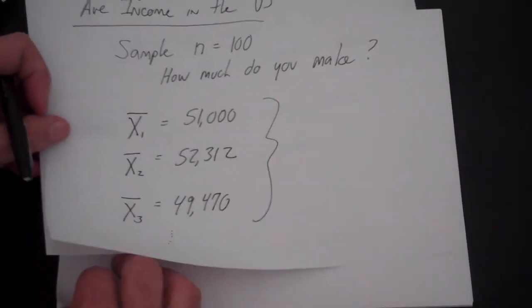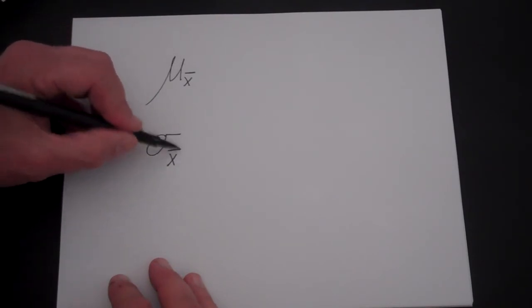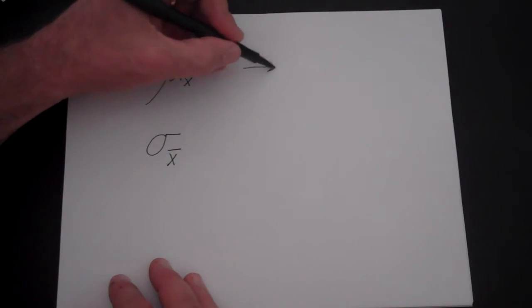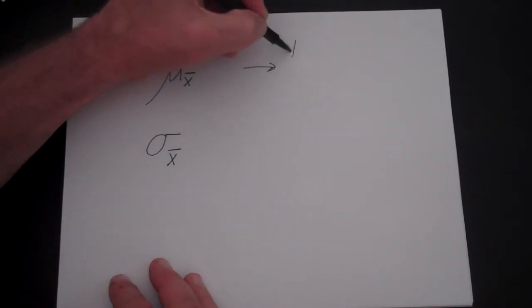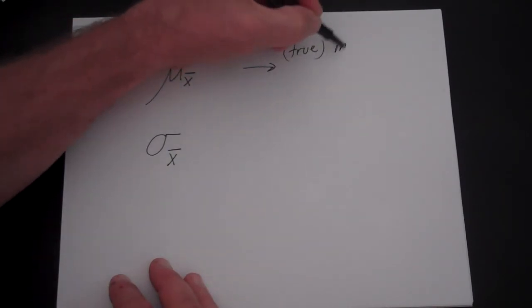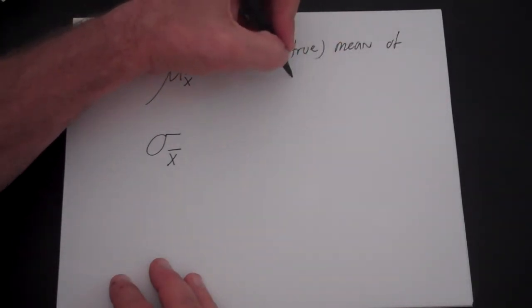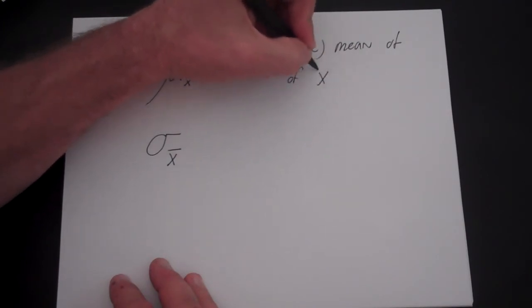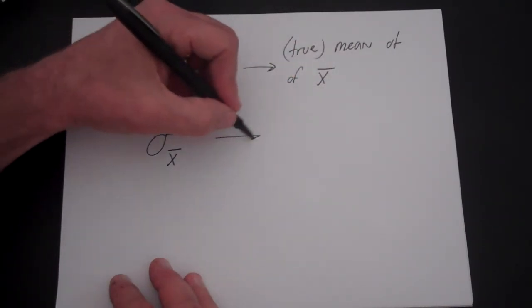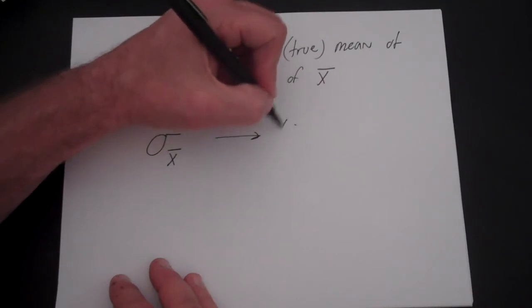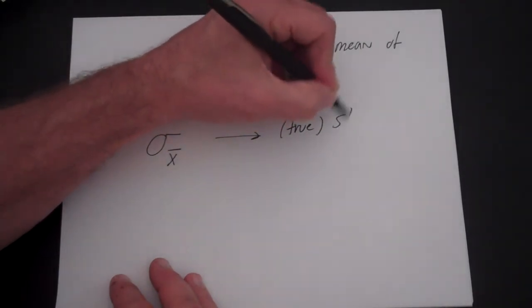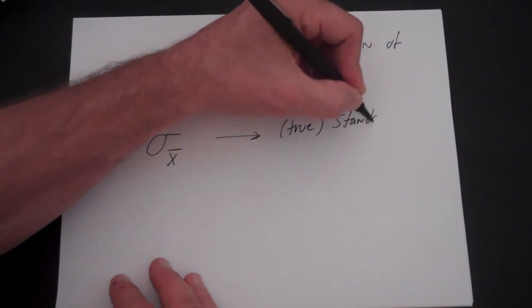The way you think about that is you would get what would be called mu x bar and sigma x bar. Mu x bar would be the true mean of the estimator x bar, and sigma x bar would be the true standard deviation of x bar.